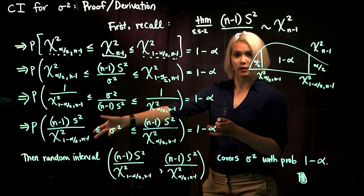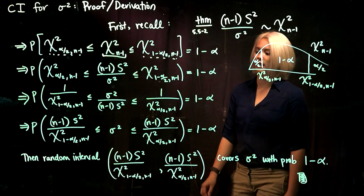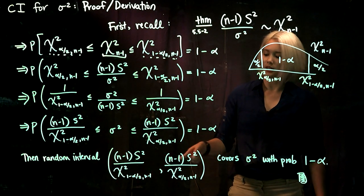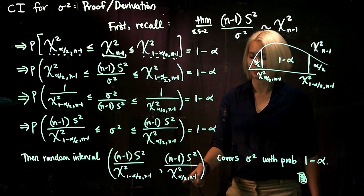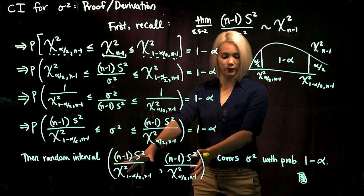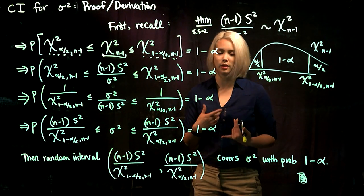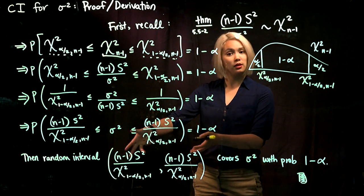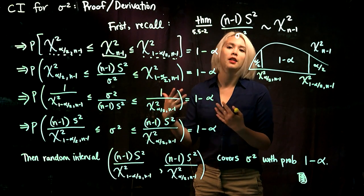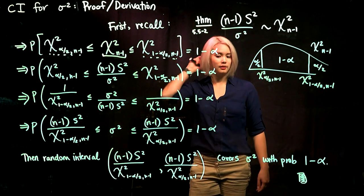We have essentially created a random interval. The lower endpoint is n minus 1 times sample variance divided by the chi-squared quantile with 1 minus alpha over 2 below it, and the upper endpoint is n minus 1 times sample variance divided by the chi-squared quantile with alpha over 2 below it. According to this, it will cover sigma-squared with probability 1 minus alpha. Just as with confidence intervals for means, we don't know if any one particular interval will cover sigma-squared, but if we construct intervals like this over and over, 1 minus alpha times 100% of them will cover sigma-squared.